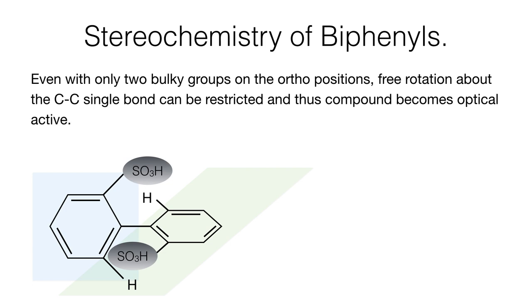For example, here sulfonic groups are very bulky and they restrict the rotation of the benzene rings about the carbon-carbon single bond. Thus, the two benzene rings arrange themselves perpendicular to each other.